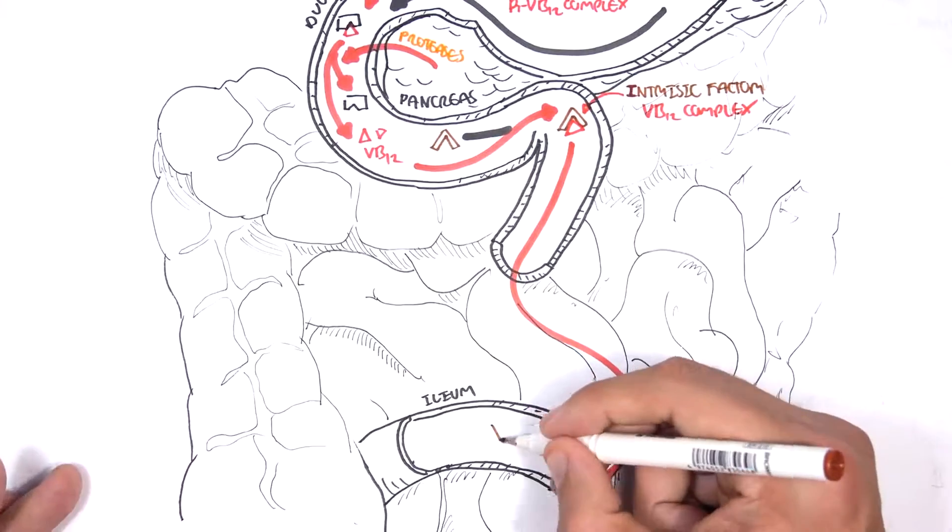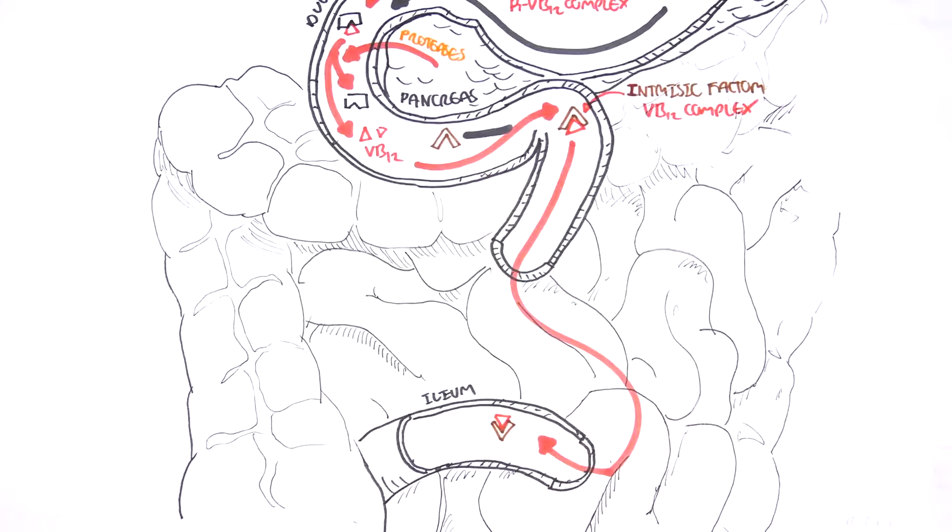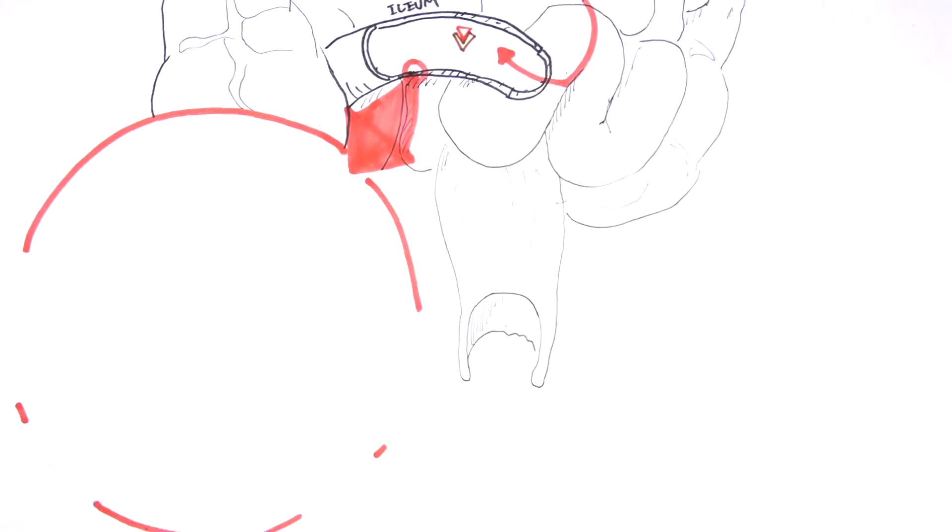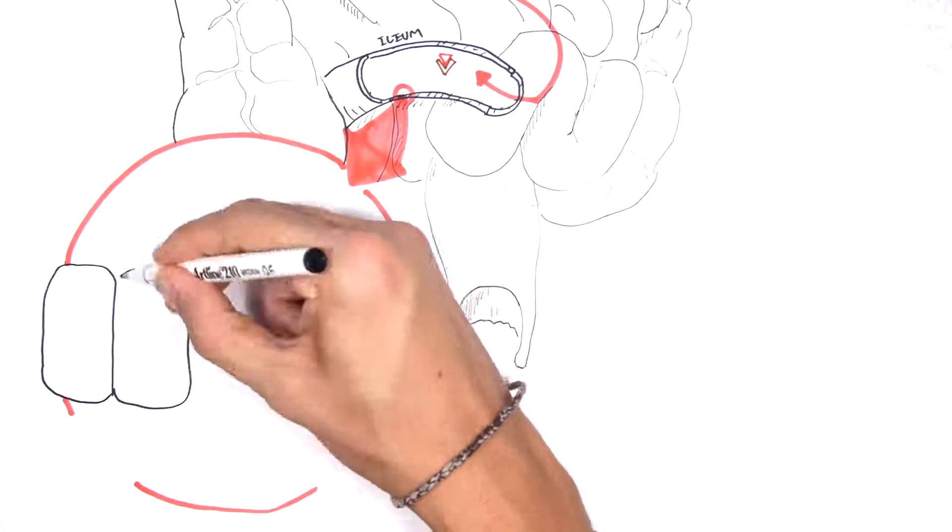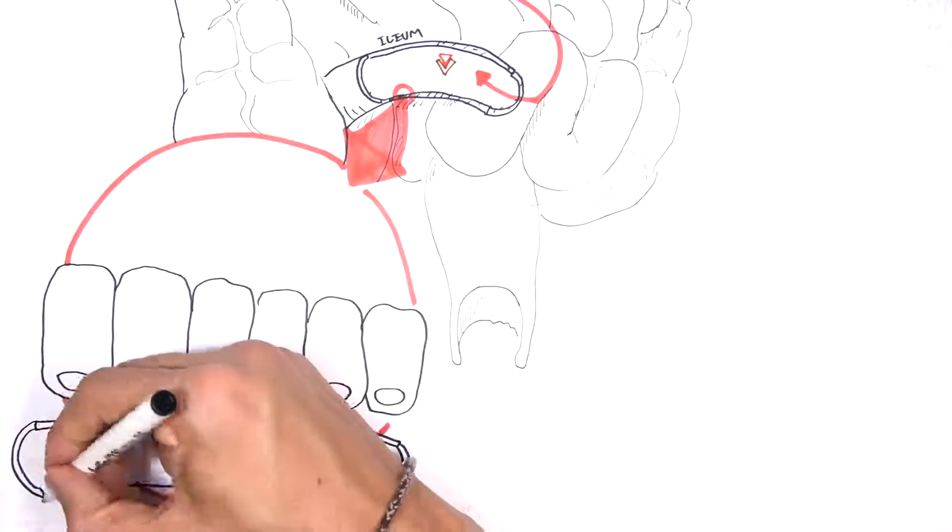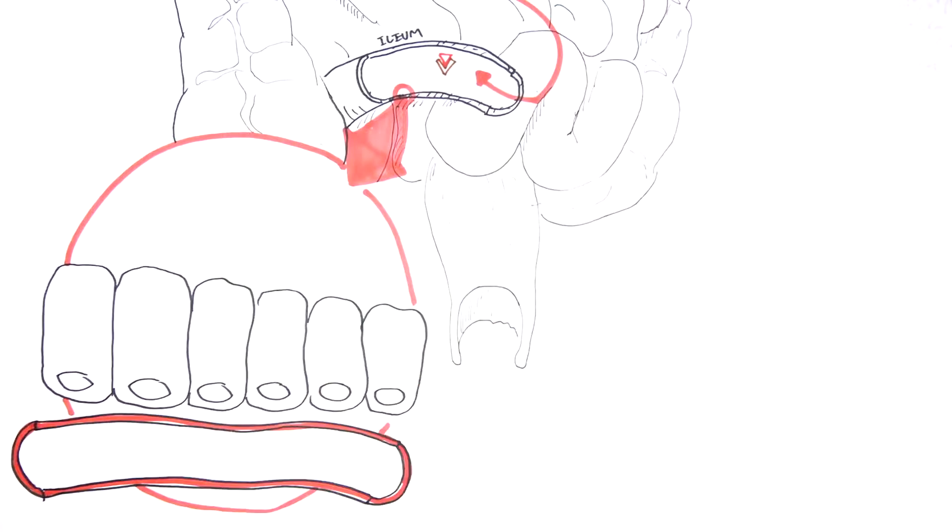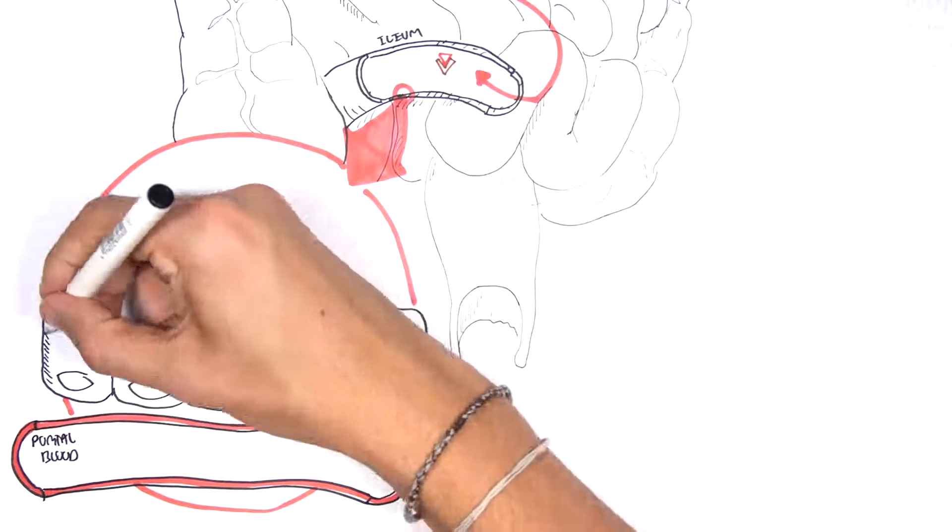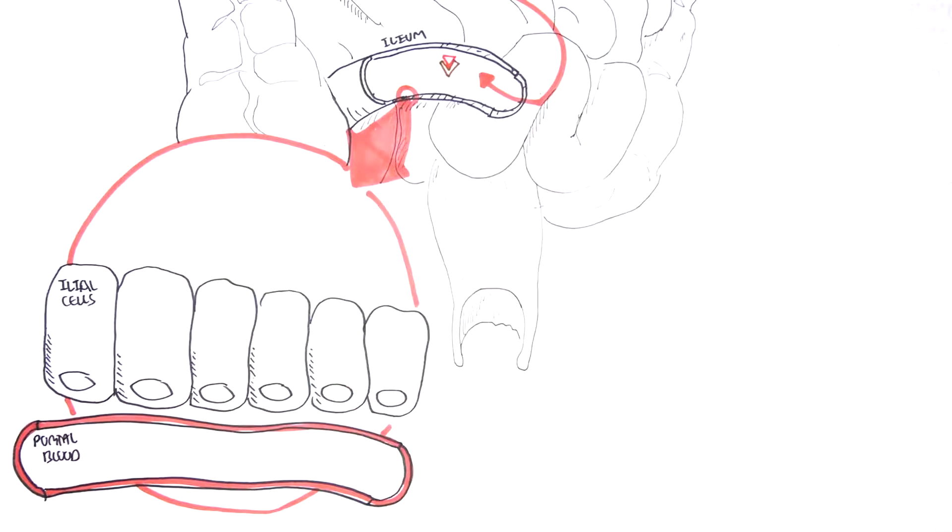Now within the ileum, there are receptors for intrinsic factor. So here if we zoom into the section, we can see that there's ileal cells, and on the basal side of these cells, of these columnar ileal cells, is the portal vein, which will return blood to the liver.